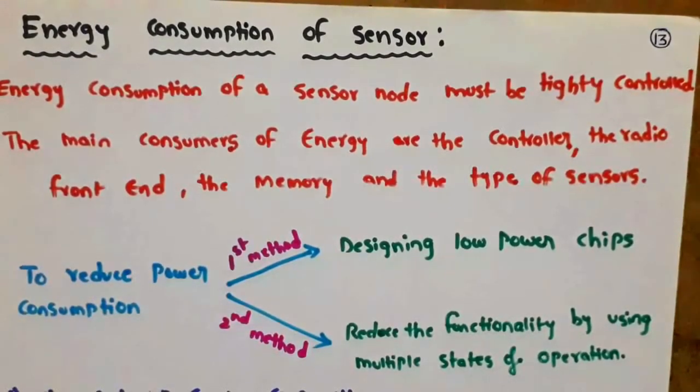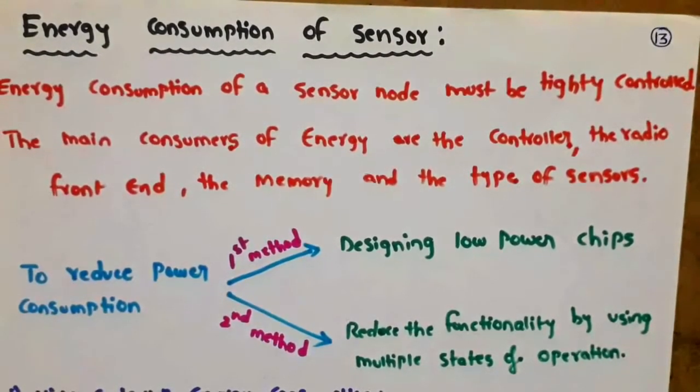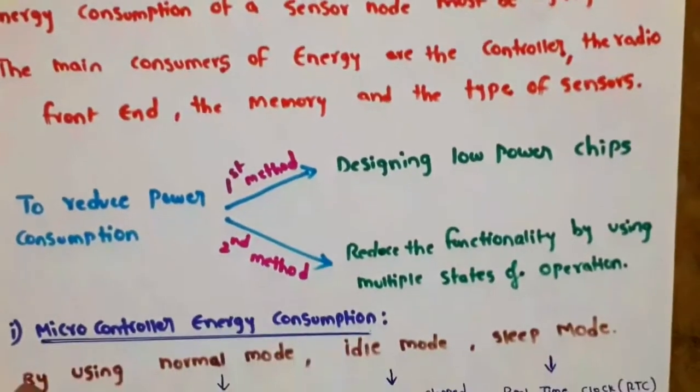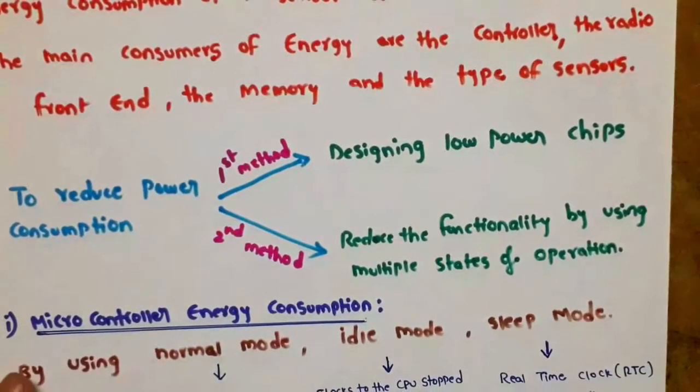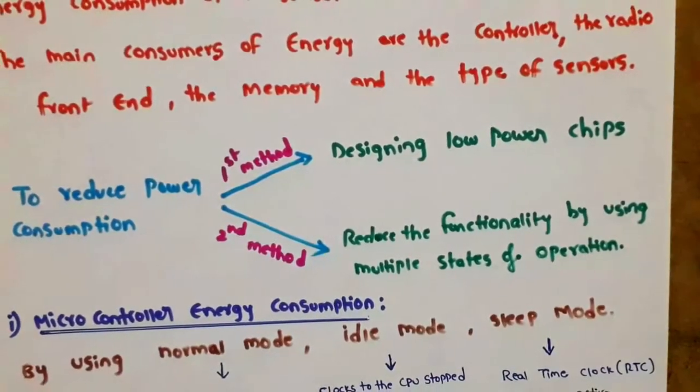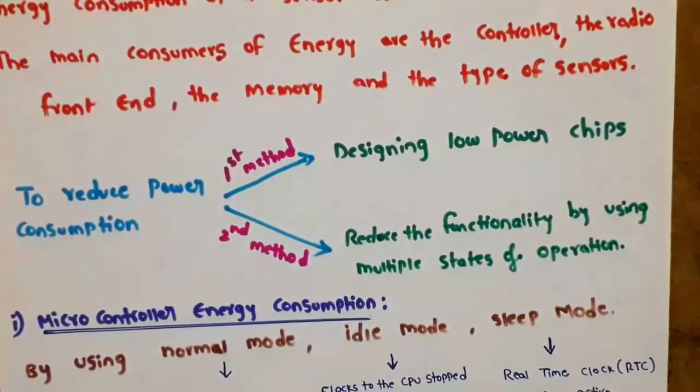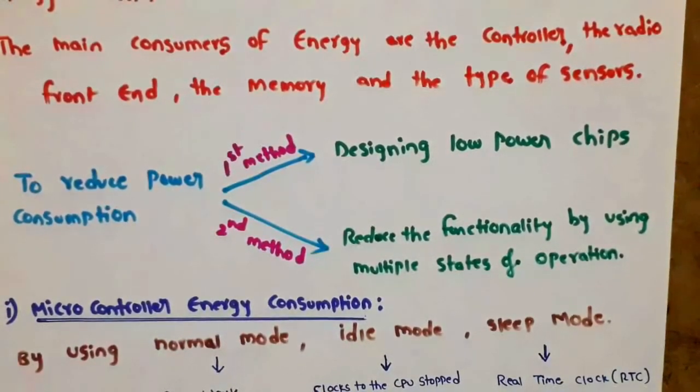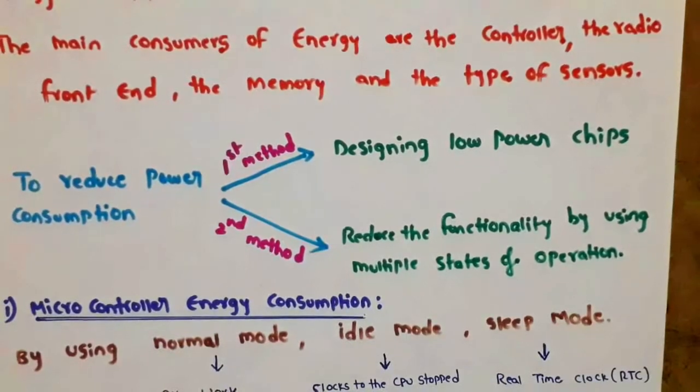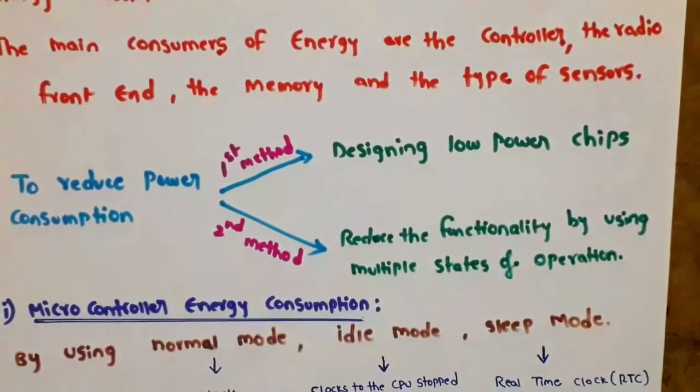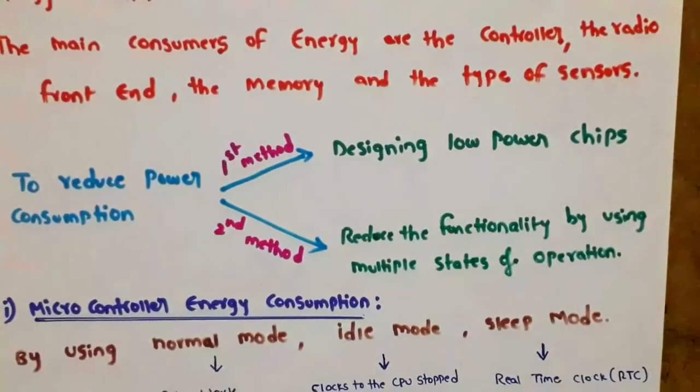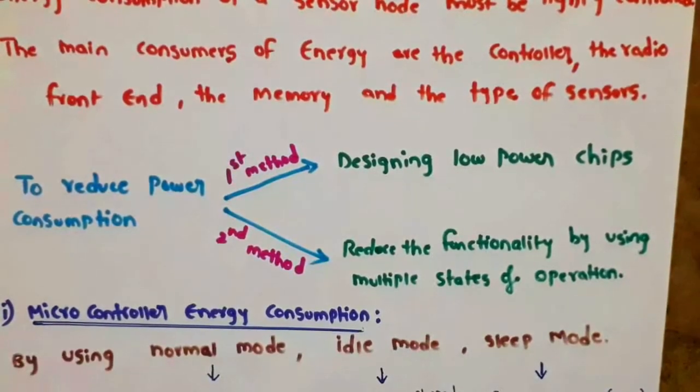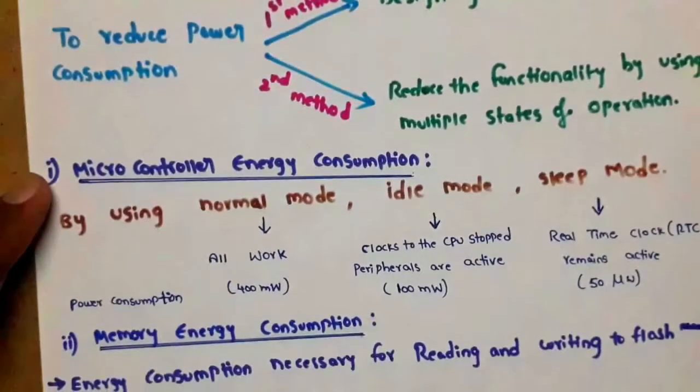To reduce power consumption, we have two methods. The first method is designing low power chips, which reduces functionality. The second method is to reduce the functionality by using multiple states of operation. By operating in multiple states, we can reduce and save energy consumption.